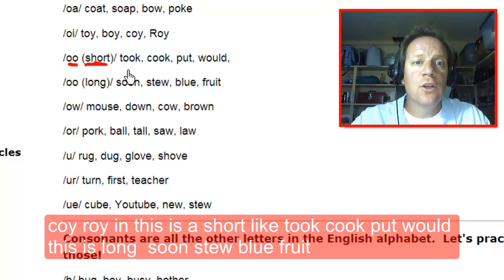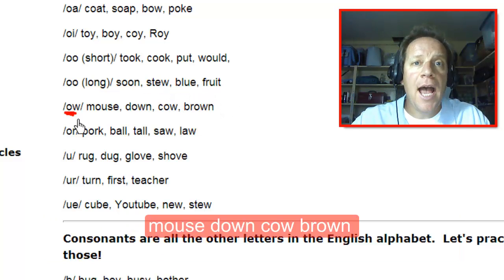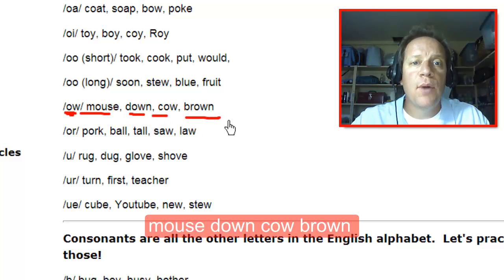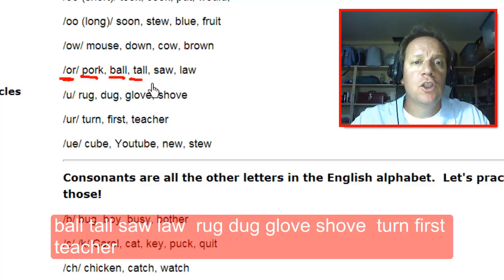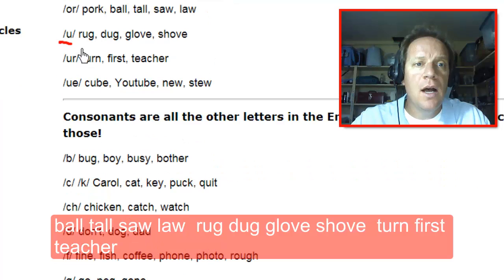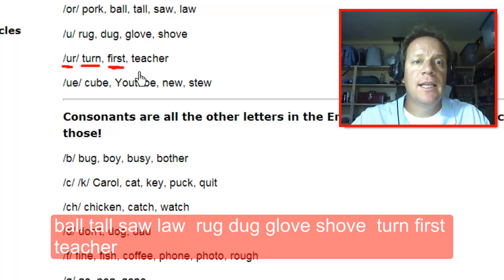Short U like took, cook, put, wood. Long U like soon, stew, blue, fruit. OW like mouse, down, cow, brown. OR like pork, ball, tall, saw, law. UH like rug, dug, glove, shove. UR like turn, first, teacher.